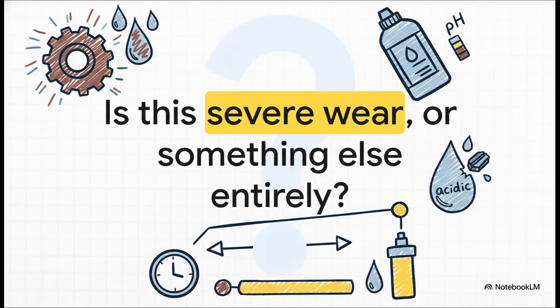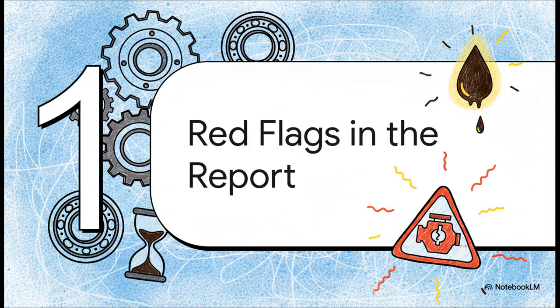So that brings us to the core mystery. Are we staring down the barrel of a serious mechanical problem, like some critical parts are just grinding themselves into oblivion? Or could there be something else going on, something totally unexpected hiding in this data? Okay, let's dive into this. To crack this case, we've got to look at all the evidence. So let's start by digging into the other red flags from the lab report and get a little bit of context on the car itself.